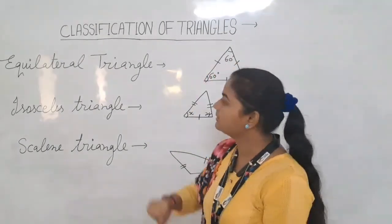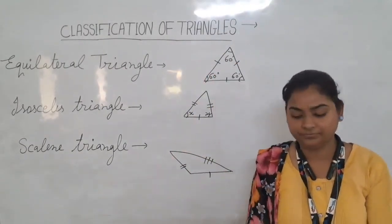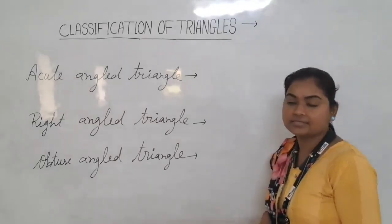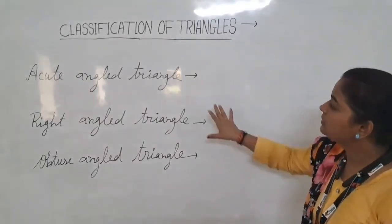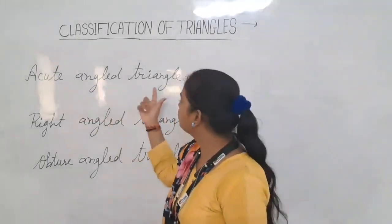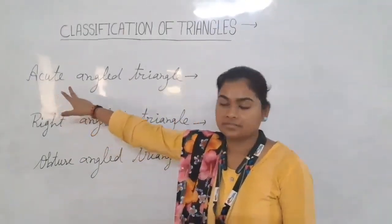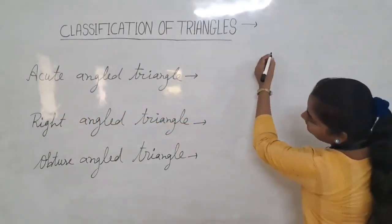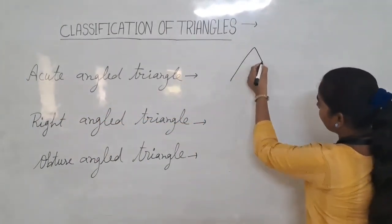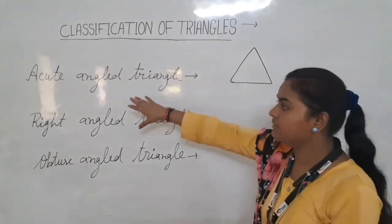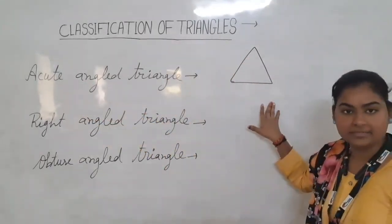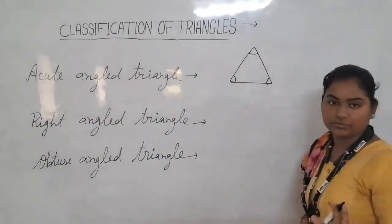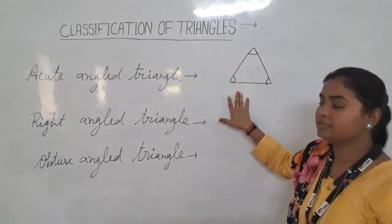Now we take the classification of triangles according to angles. Based on angles, we also have three triangles. First is the acute angle triangle. Acute means an angle which is greater than 0 and less than 90 degrees. In an acute angle triangle, all three interior angles are acute — meaning greater than 0 and less than 90.